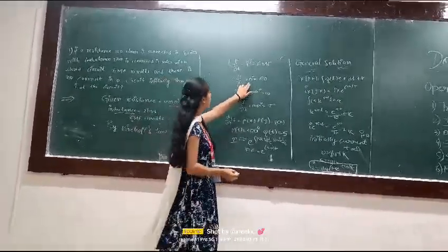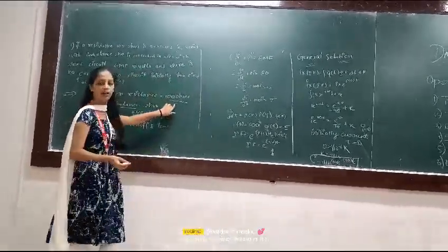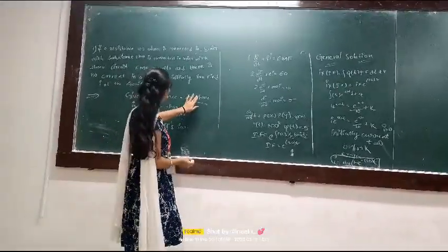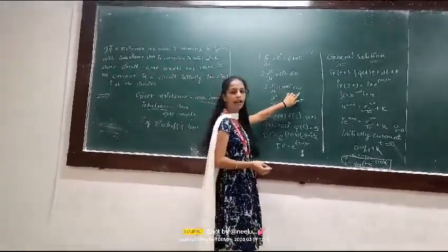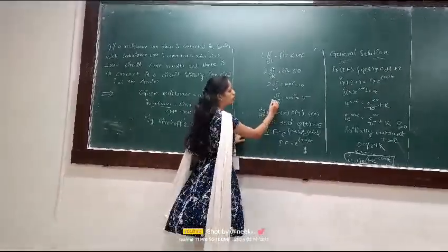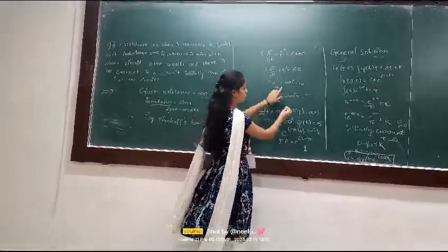So di/dt, Ri equals 100 ohms. R equals 100 ohms, so 100i equals 10. So di/dt plus Ri equals 5.